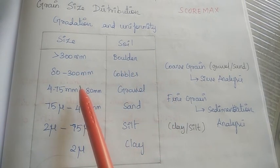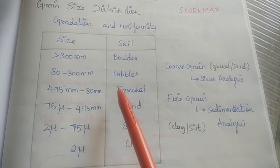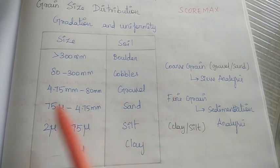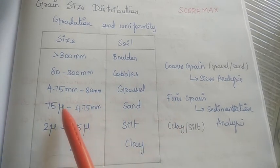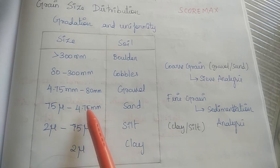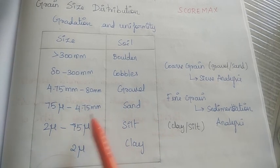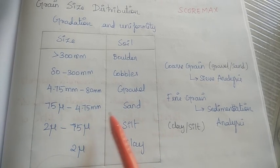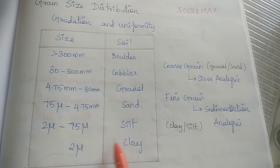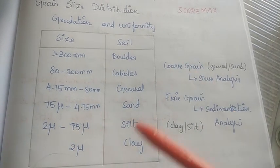Cobbles are above 80mm. Gravel is 4.75mm to 80mm. Sand is 75 microns to 4.75mm. Silt is 2 microns to 75 microns. Clay is less than 2 microns.